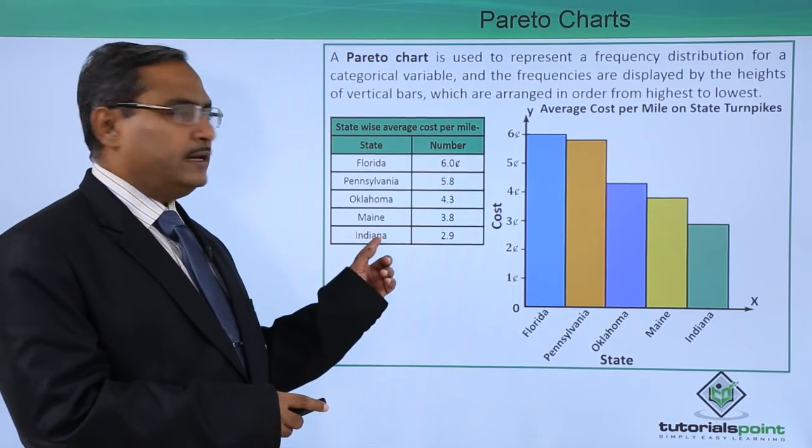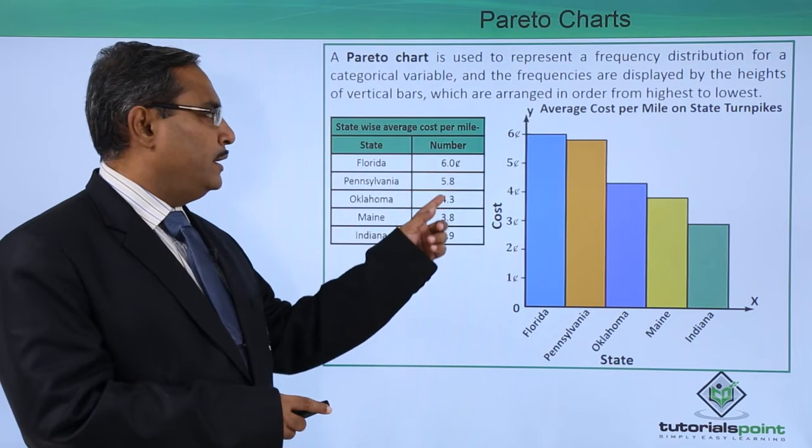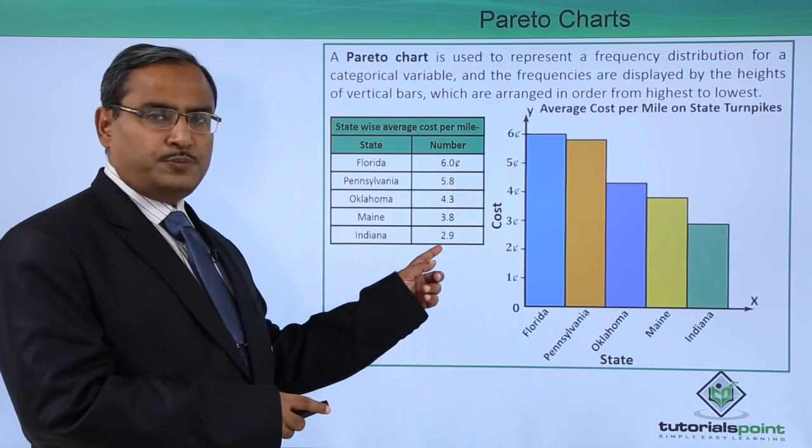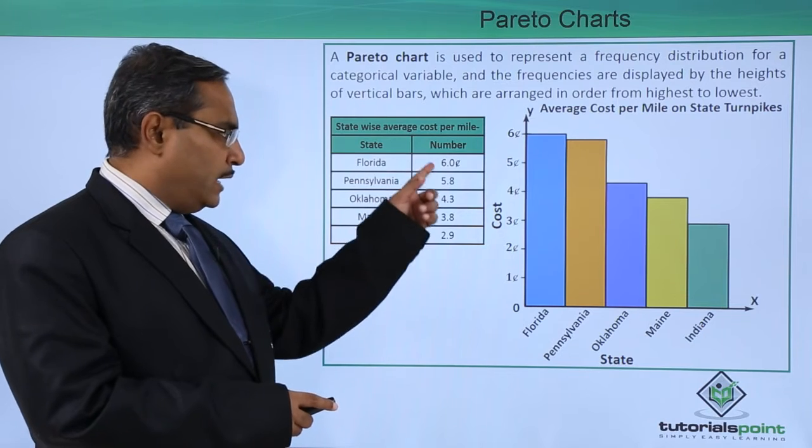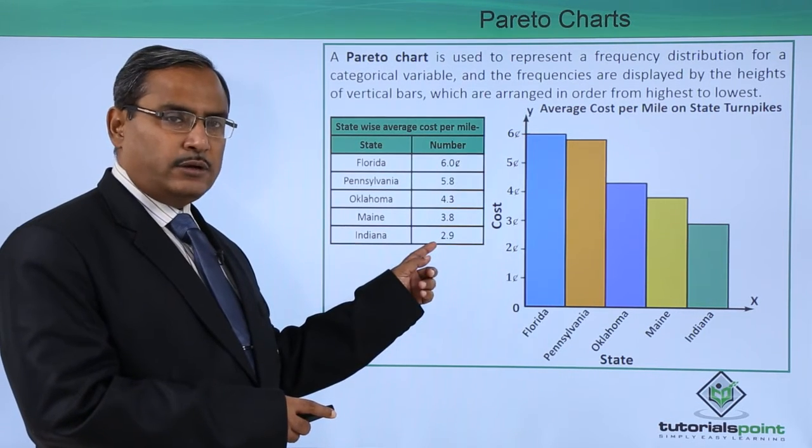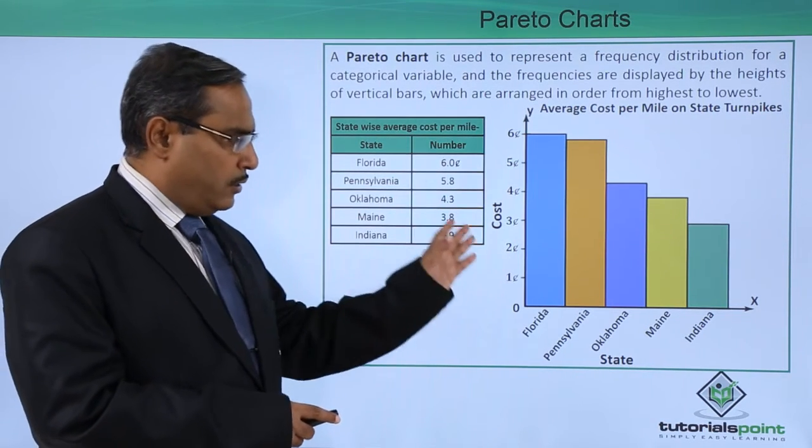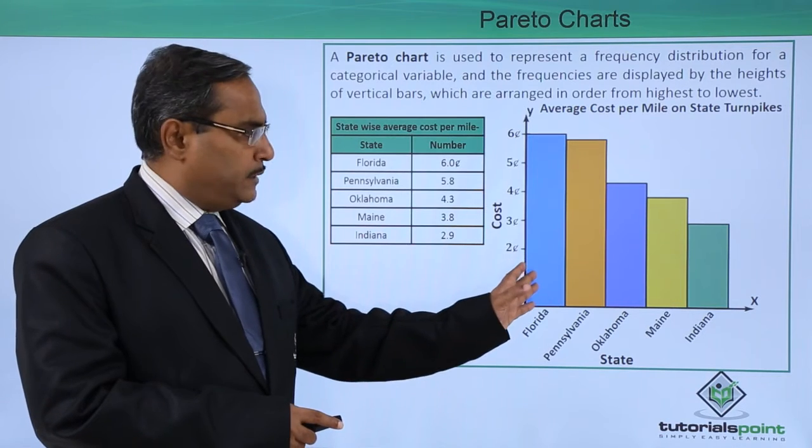Here we are having different state names and the state-wise average cost per mile. The numbers are written, and they are arranged in descending order from the highest to the lowest. Now, if we plot the respective graph here...